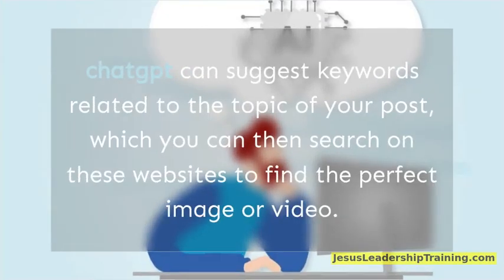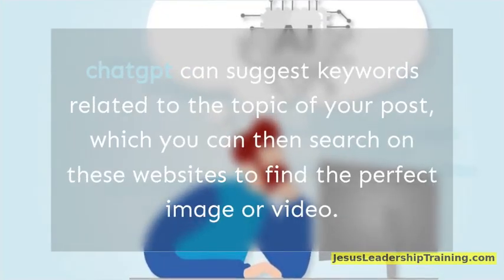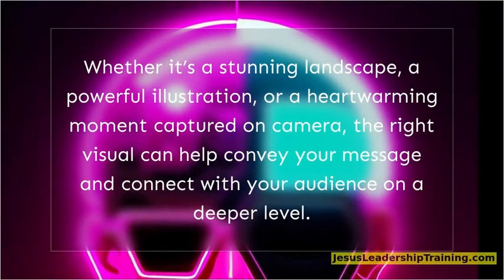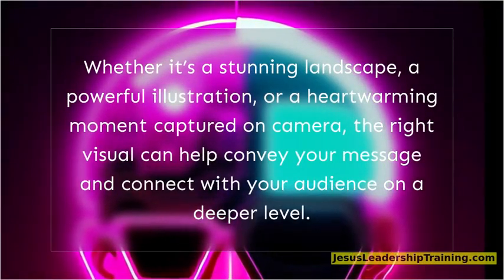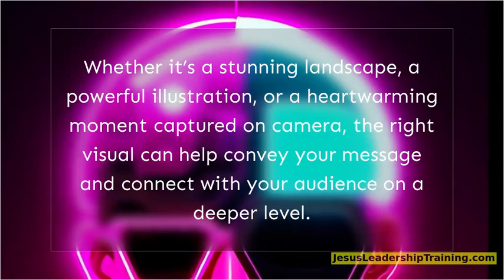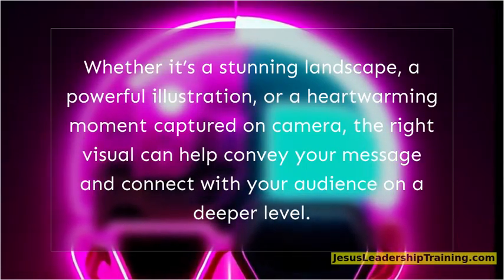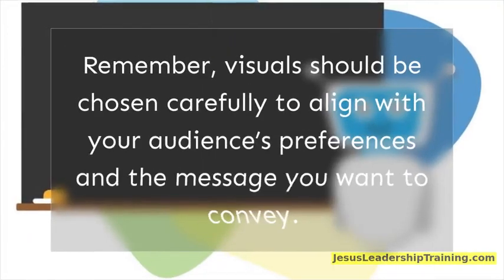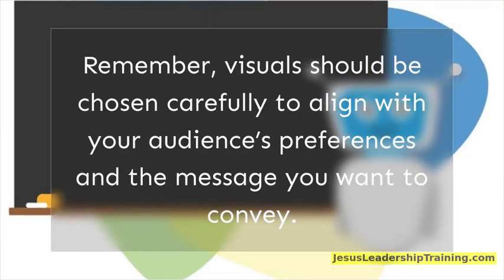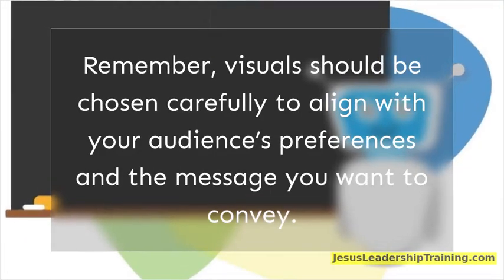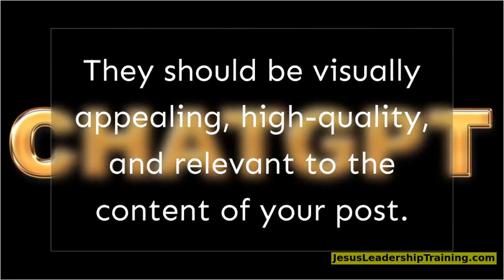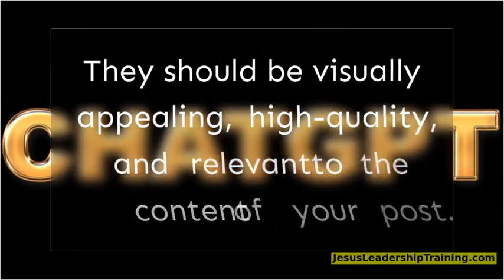ChatGPT can suggest keywords related to the topic of your post, which you can then search on stock image websites to find the perfect image or video. Whether it's a stunning landscape, a powerful illustration, or a heartwarming moment captured on camera, the right visual can help convey your message with your audience on a deeper level. Remember, visuals should be chosen carefully to align with your audience's preferences and the message you want to convey. They should be visually appealing, high quality, and relevant to the content of your post.